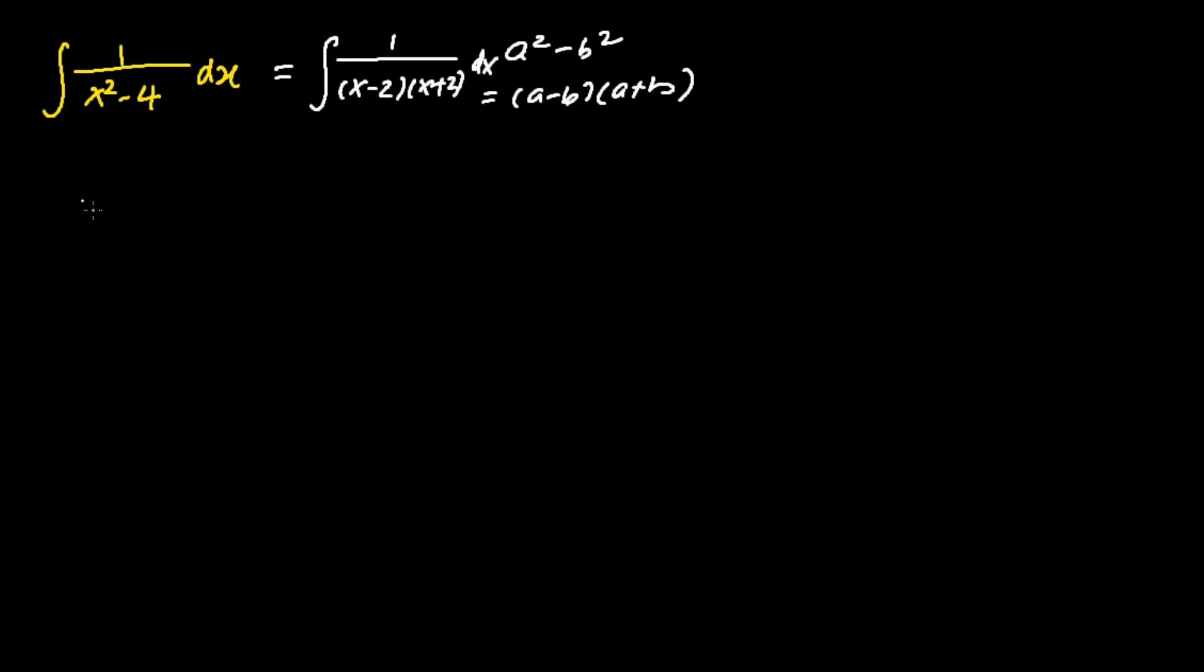The next step is applying the partial fraction technique. This will give us A over (x minus 2) plus B over (x plus 2), in which we will need to determine what is A and what is B.